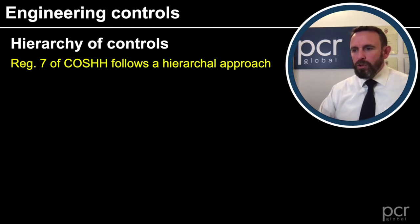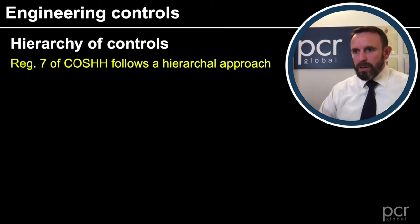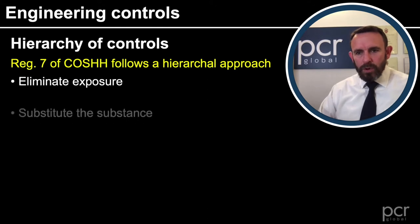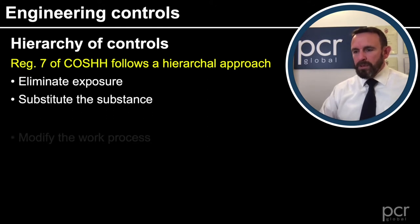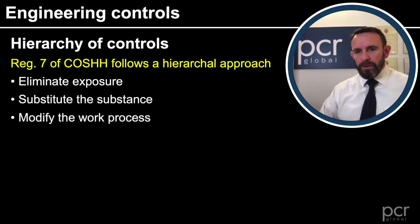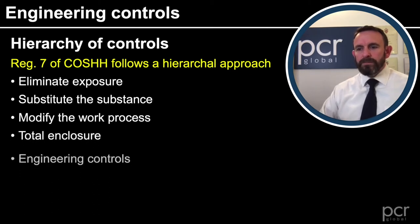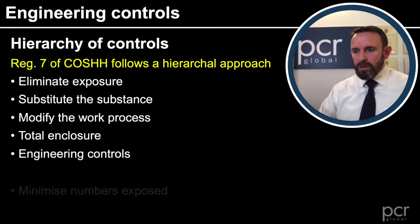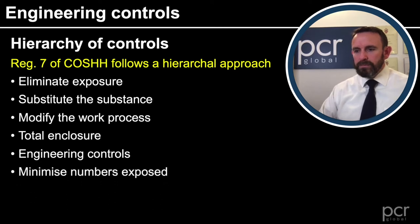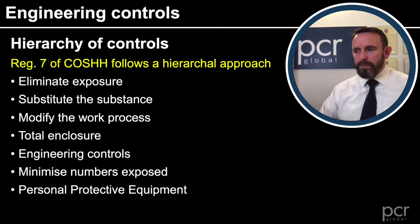Regulation 7 of COSHH follows a hierarchical approach. We know there's a hierarchy of controls in other regulations, but in COSHH it follows: eliminate exposure, substitute the substance, modify the work process, total enclosure, engineering controls, minimising the numbers of people exposed, and personal protective equipment.